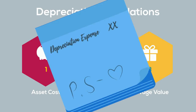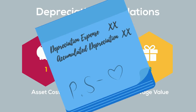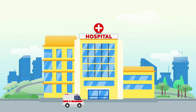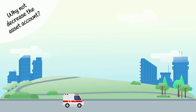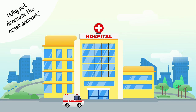Once we've determined the depreciation amount using one of the available depreciation methods, we record the depreciation by debiting depreciation expense and crediting accumulated depreciation. Accumulated depreciation is an asset, but it's a contra asset — therefore it is increased by credit and has a normal balance of a credit. Why do we use accumulated depreciation instead of decreasing the asset account? Unlike supplies, PP&E doesn't physically go away with use — we are allocating the cost over the asset's useful life.